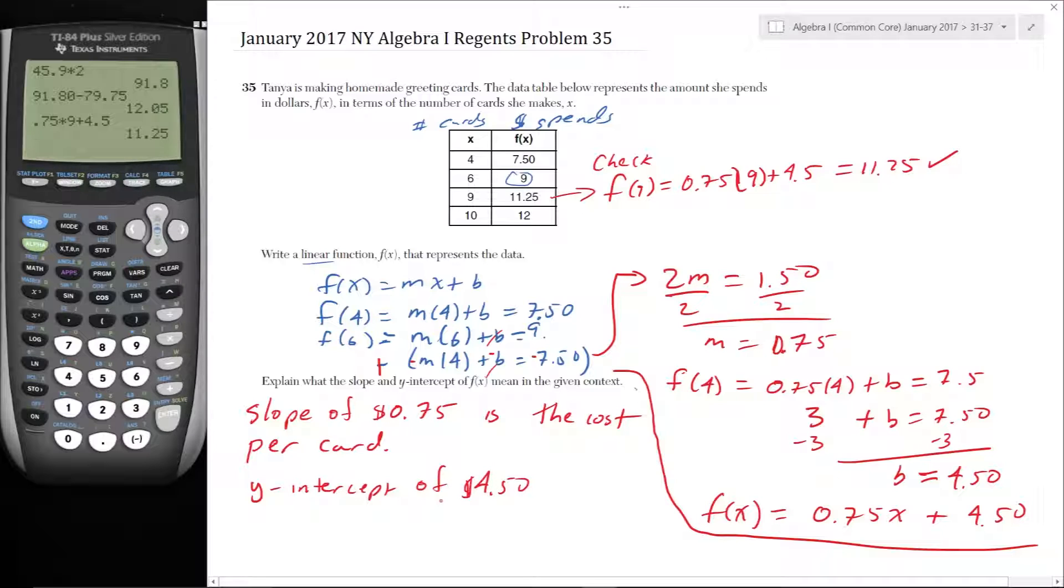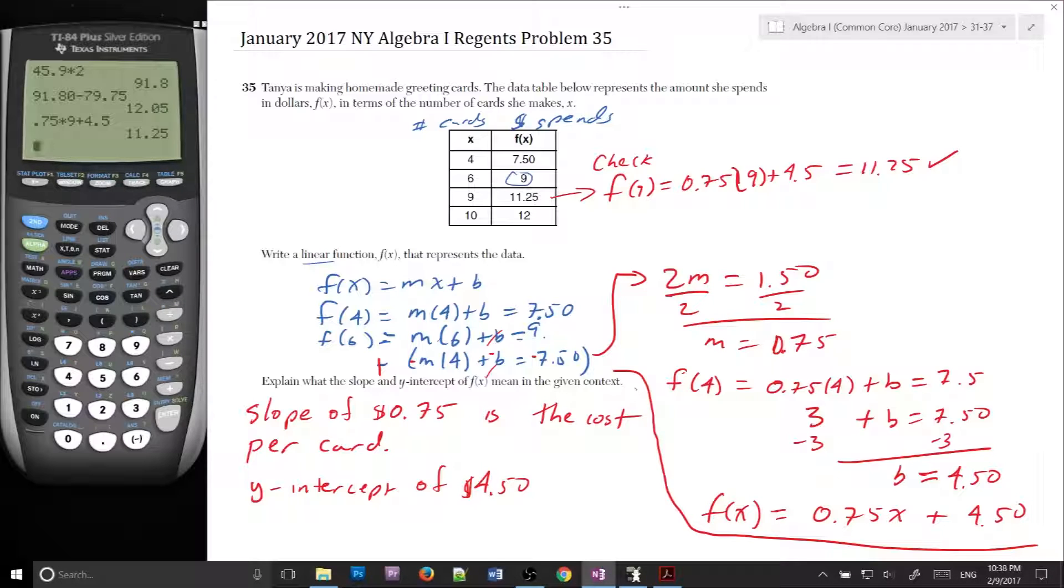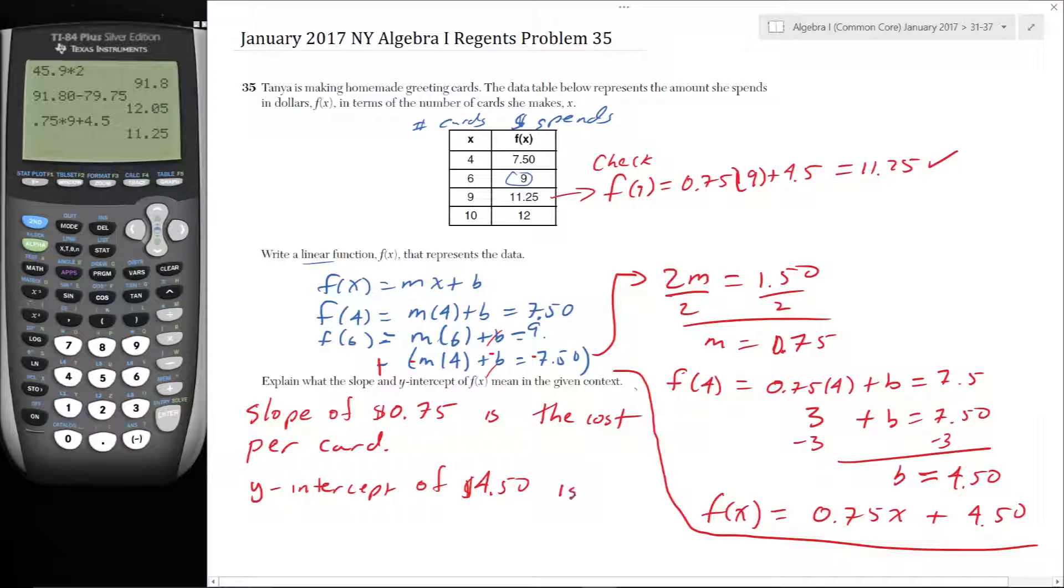The Y-intercept of $4.50. Now, what does that represent? That means that if she doesn't buy any cards, then she spends $4.50, which might sound weird, but that happens a lot, that you have a certain fixed cost to the situation. For example, if you're making homemade greeting cards, you've got to spend gas to go buy the materials. That's a quick fixed cost. Assuming you're driving one time, that would be a fixed cost.